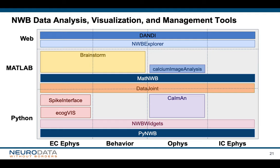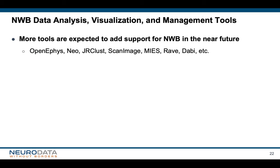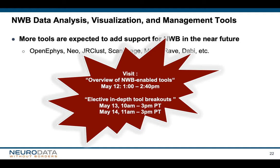This gives you a rough overview of just some of the analysis tools available for NWB. We expect more tools to come online supporting NWB in the near future. For example, we're actively working with OpenEphys. NIO already has pull requests to add NWB support. JRclust and ScanImage will likely support NWB soon. There are also tools such as MIES, RAVE, and Dobby that are working on NWB support. Please attend our overview of NWB-enabled tools today, and then the elective in-depth sessions for the individual tools tomorrow and the day after.